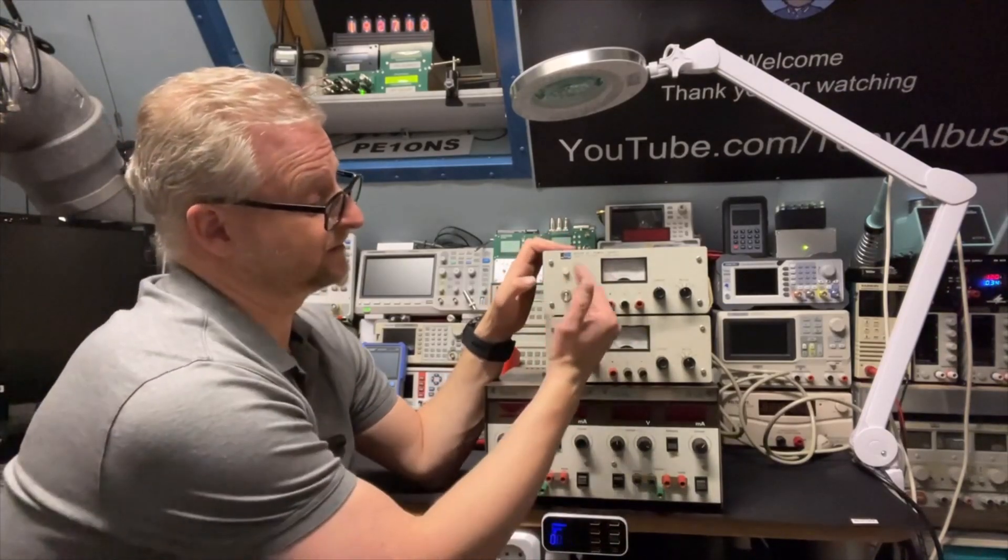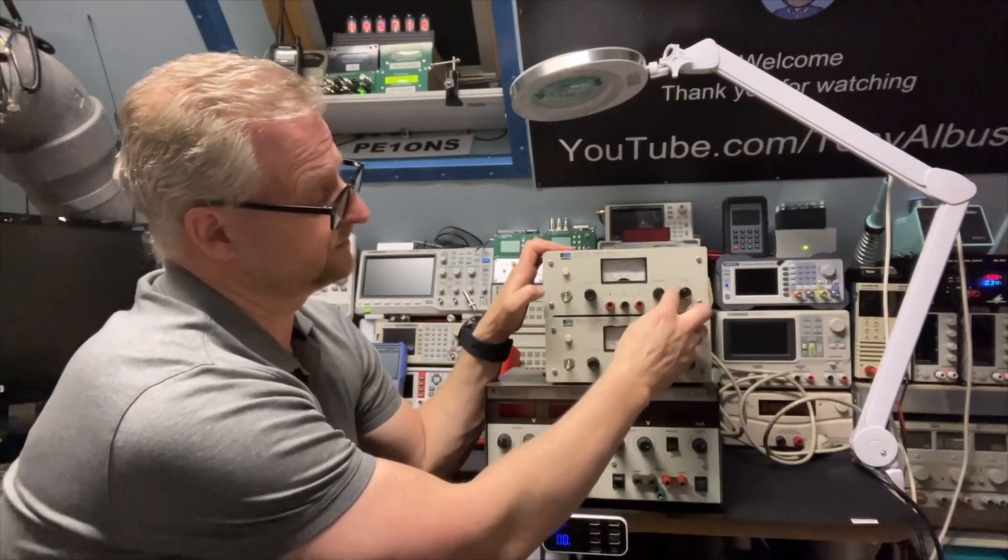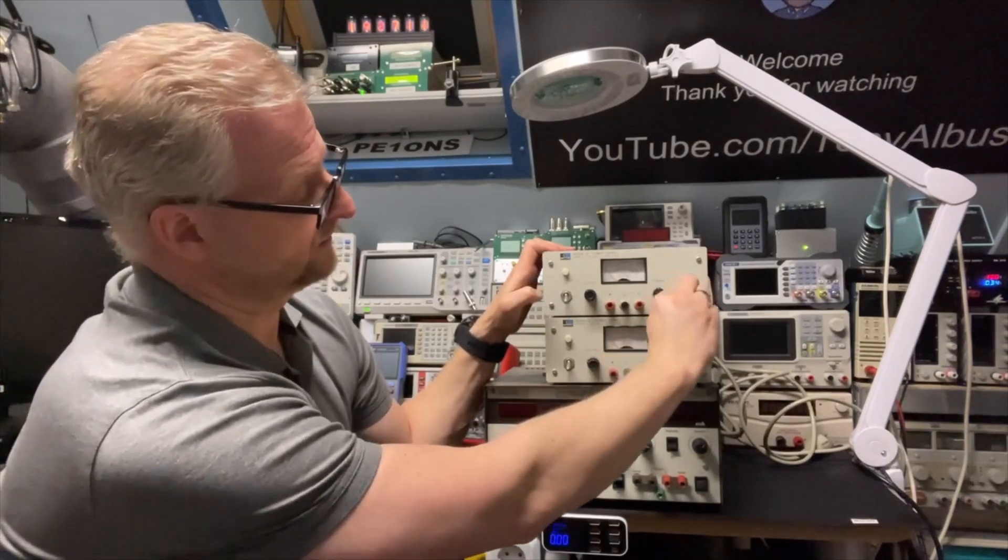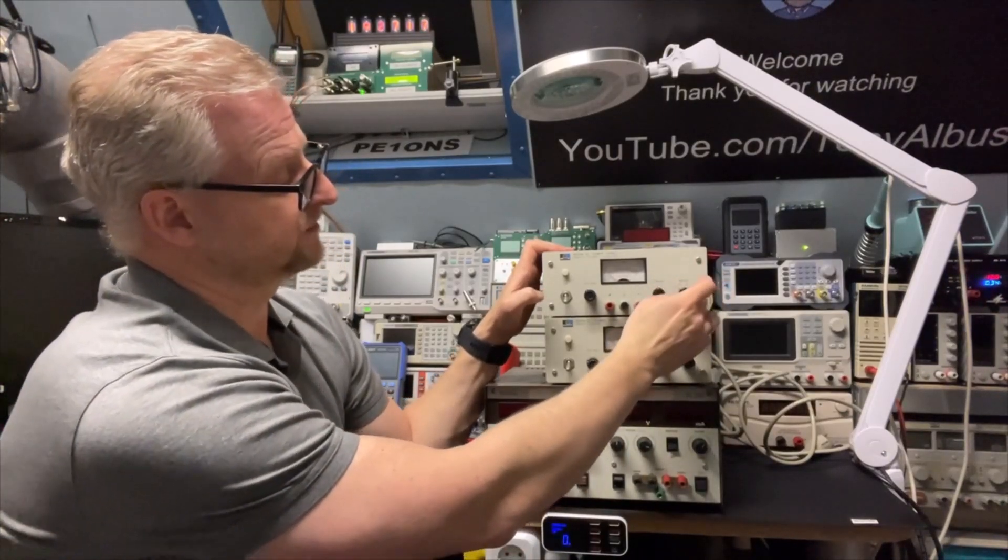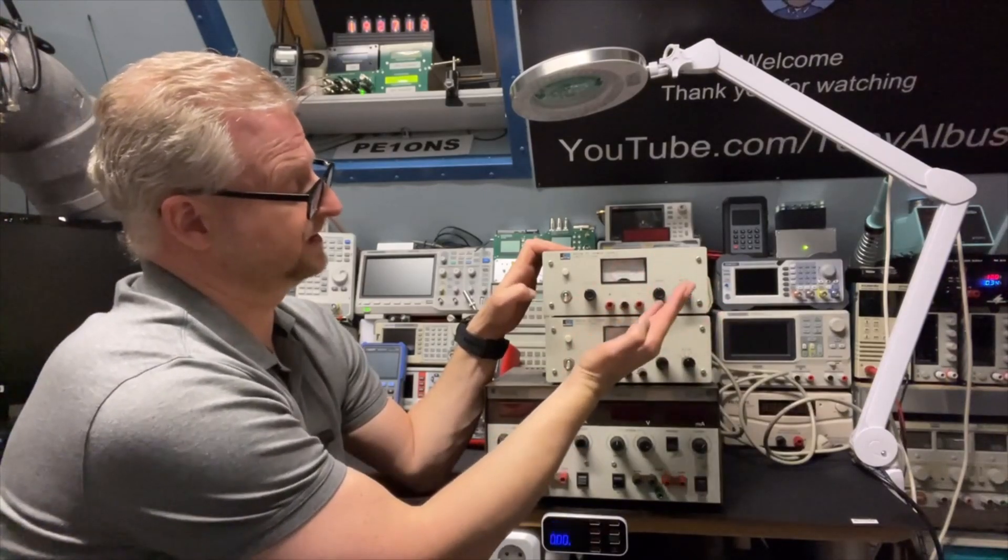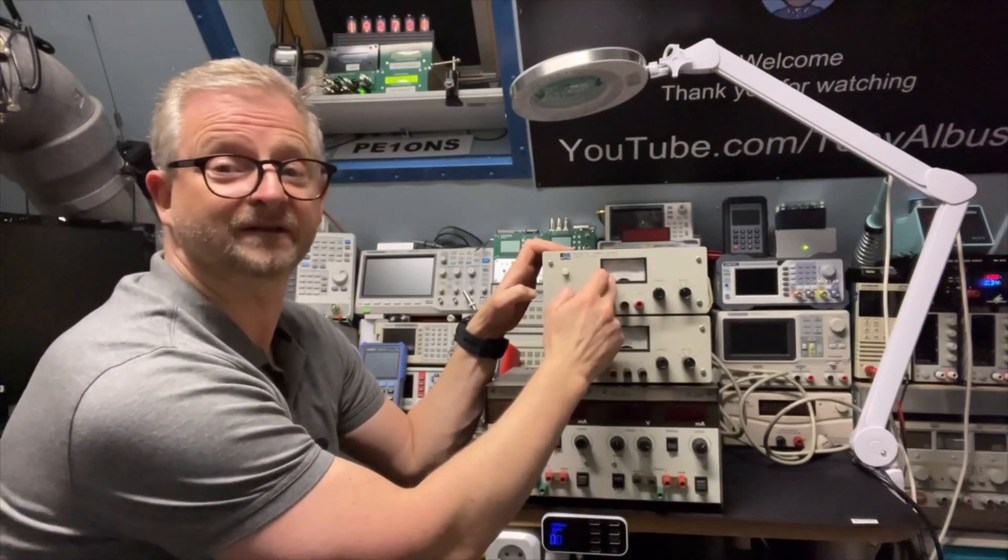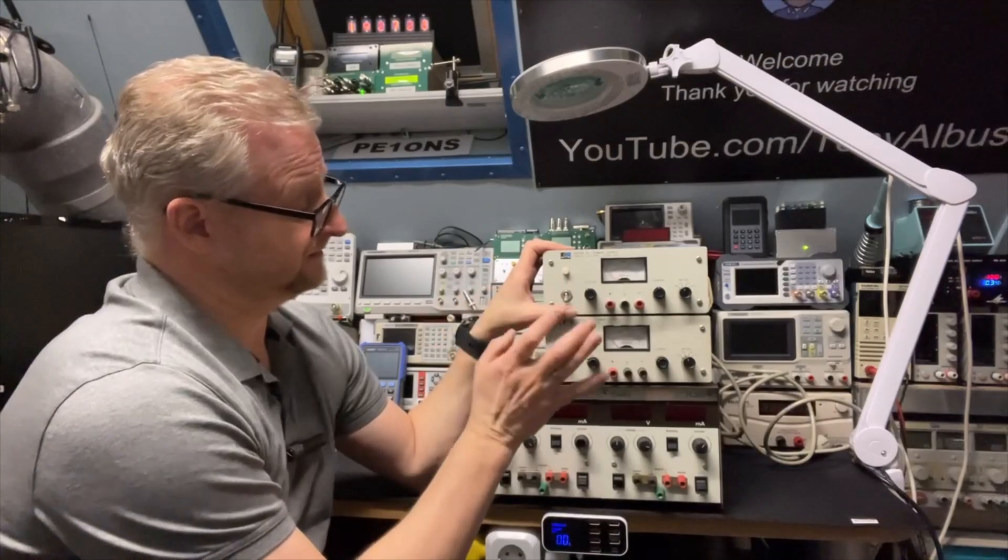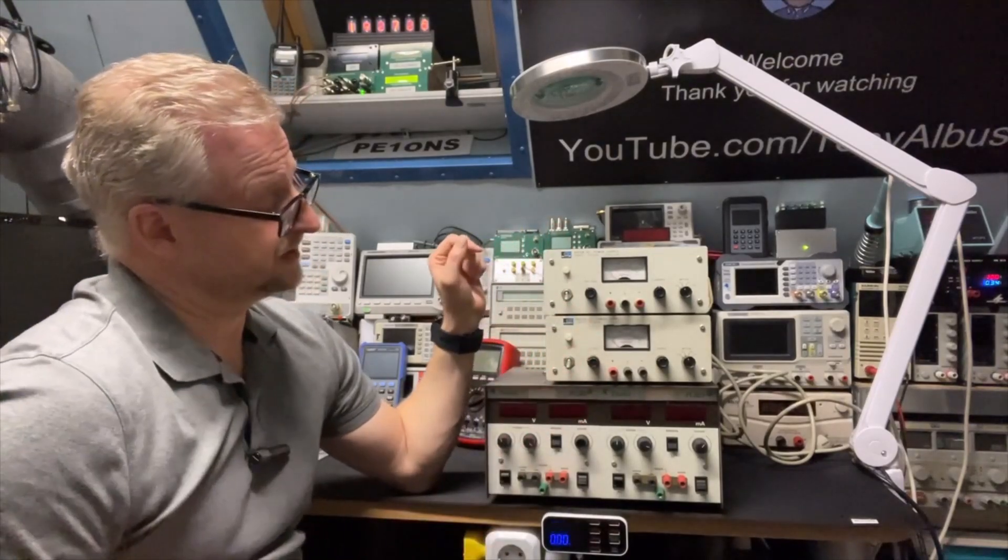And it's 7.5 volts, 3 amps, but the scale is very nice because you can switch it from 0 to 9 volts, 4 amps, or 0 to 4 amps. So you can really see properly even though it is analog and they actually look quite good.